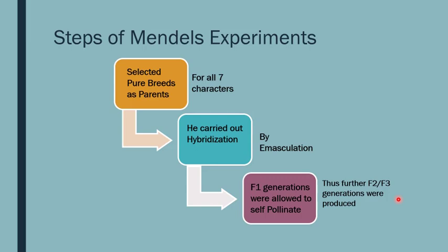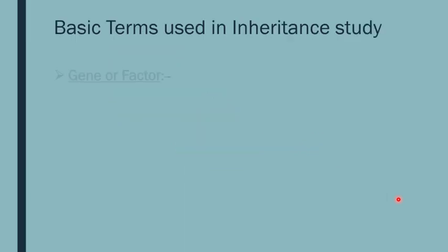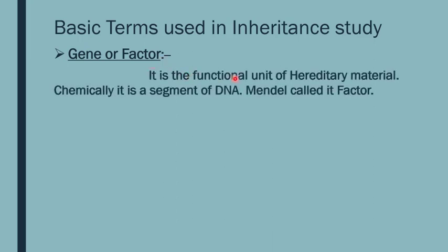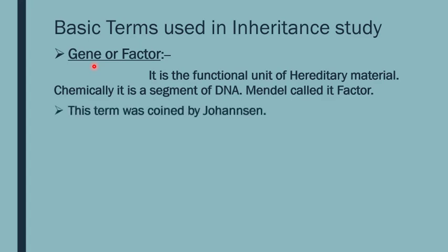What are the basic terms used in inheritance study? First, we study the gene. Mendel did not know the word gene — he used the concept of 'factor.' A factor is the functional unit of heredity. We now know a gene is a functional unit of hereditary material — chemically, a segment of DNA. Mendel just knew something was passing from parents to offspring and called it a factor. The term gene was coined by Johansson.